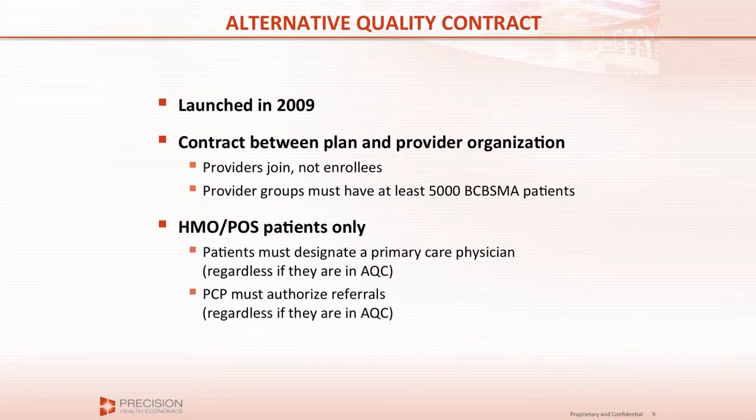It was launched in 2009, and the way it works is that providers join, not patients. If I'm a provider group and I decide to join the Alternative Quality Contract, all my patients are automatically enrolled. It is not the case that a patient raises their hand and says they want to be part of it. The one requirement was that the provider group should have at least 5,000 Blue Cross Blue Shield patients — important because you need at least that many to measure outcomes accurately.